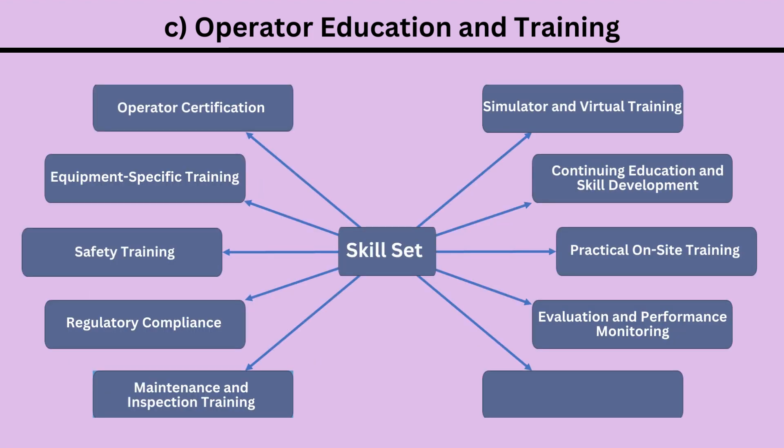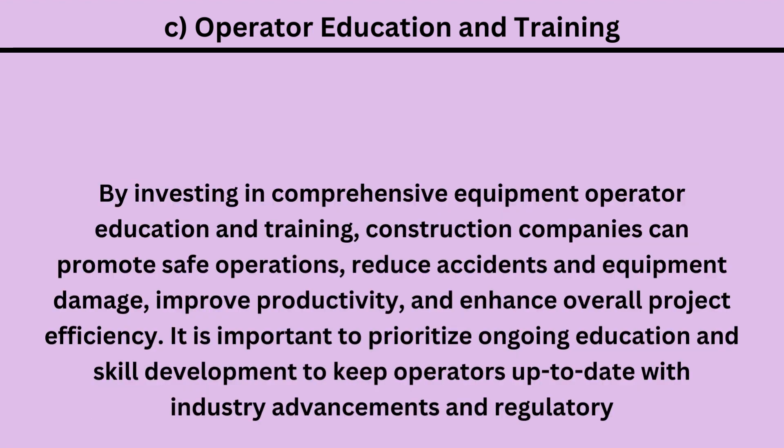More information about equipment operator education and training is available here: 1. Operator Certification, 2. Equipment Specific Training, 3. Safety Training, 4. Regulatory Compliance, 5. Maintenance and Inspection Training, 6. Simulator and Virtual Training, 7. Continuing Education and Skill Development, 8. Practical On-Site Training, 9. Evaluation and Performance Monitoring. By investing in comprehensive equipment operator education and training, construction companies can promote safe operations, reduce accidents and equipment damage, improve productivity, and enhance overall project efficiency. It is important to prioritize ongoing education and skill development to keep operators up-to-date with industry advancements and regulatory requirements.